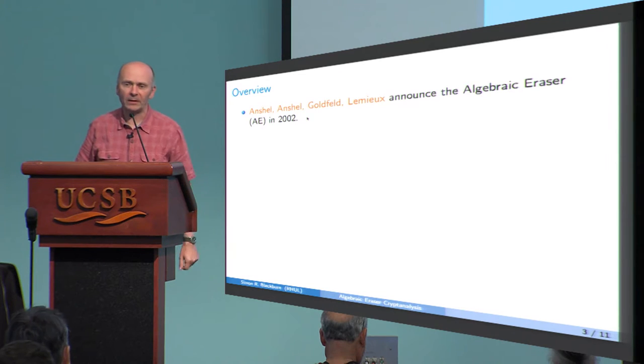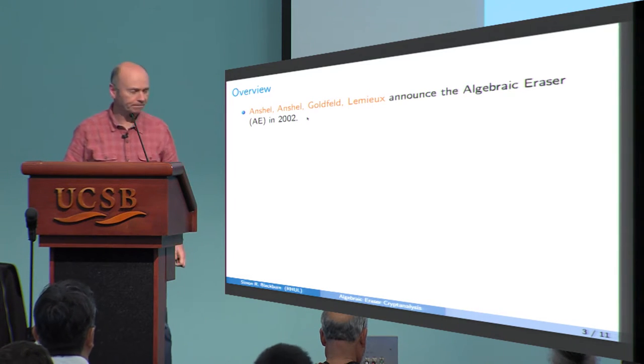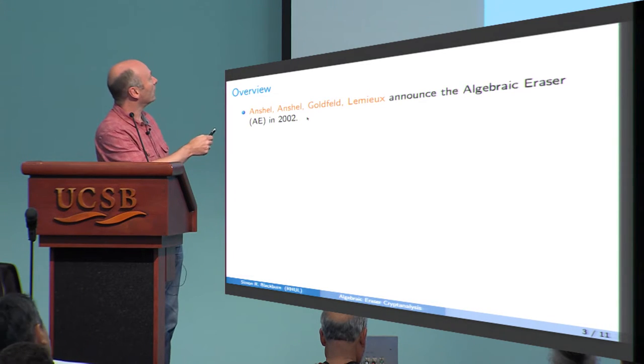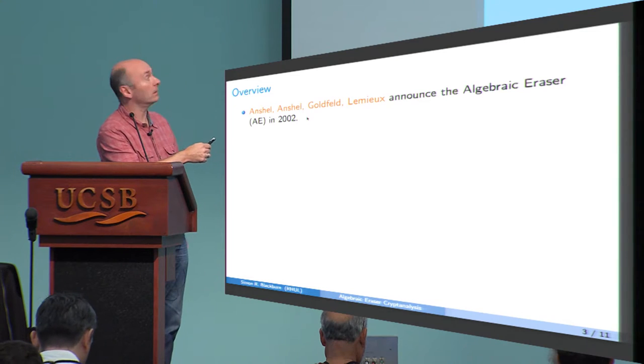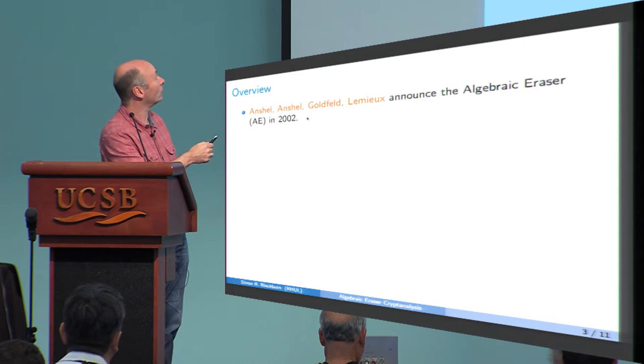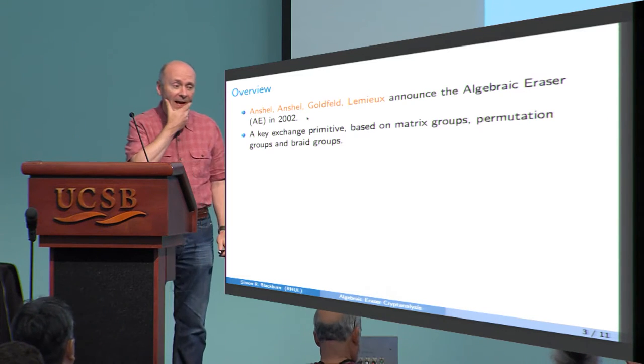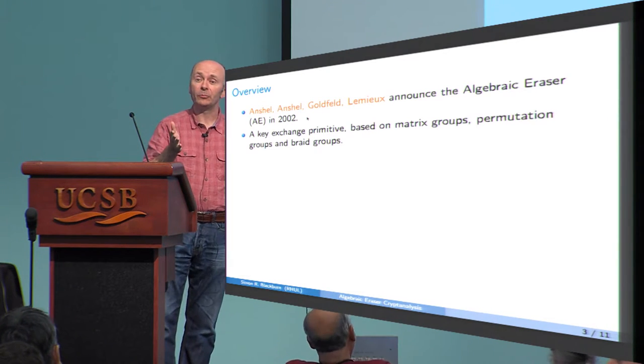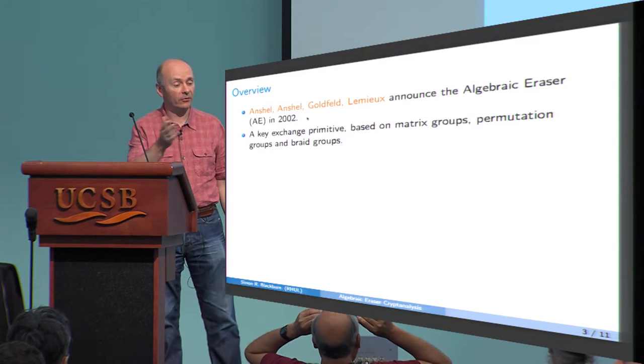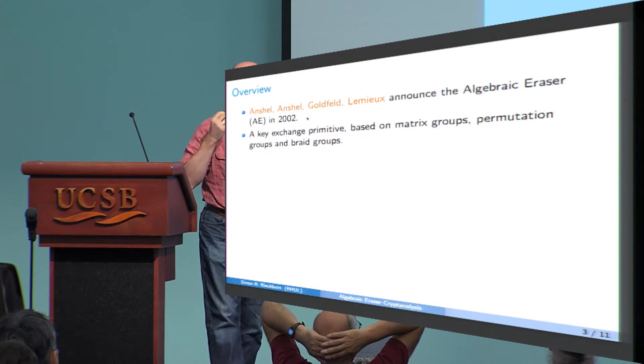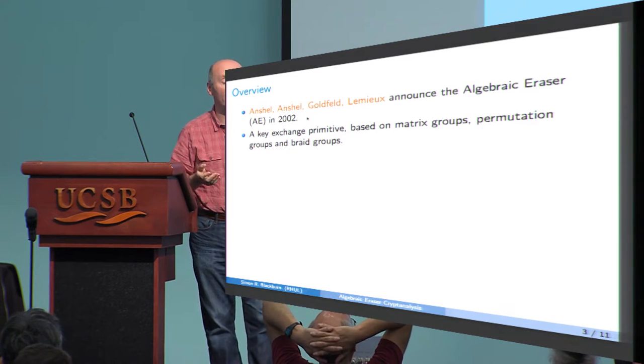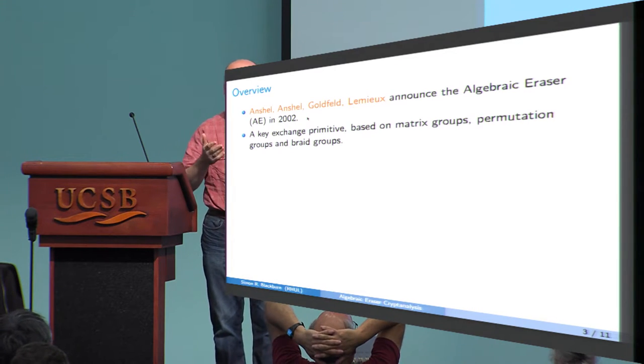So I want to talk about cryptanalysis of the algebraic eraser. This is a scheme that was introduced a while ago now, in 2002, by Anshul, Anshul, Goldfeldt and Lemieux, and it's a key exchange primitive, a bit like Diffie-Hellman, similar sort of protocol flow, but it's based on matrix groups and permutation groups and braid groups, so it's a group-based cryptosystem.